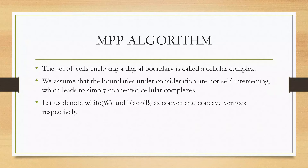Now we will develop a minimum perimeter polygon algorithm to obtain the vertices. The set of cells enclosing a digital boundary is called a cellular complex. We assume that the boundary under consideration is non-self-intersecting, which leads to simply connected cellular complexes. Let us denote convex vertices with W and concave vertices with B.